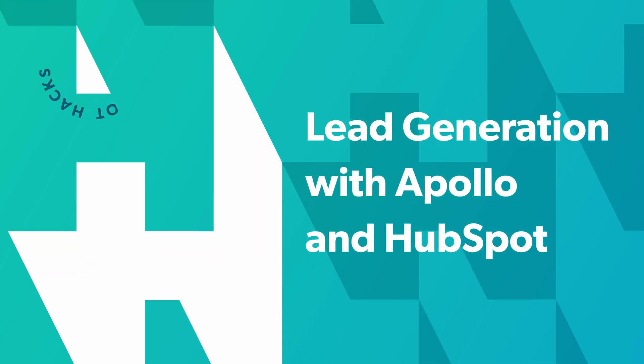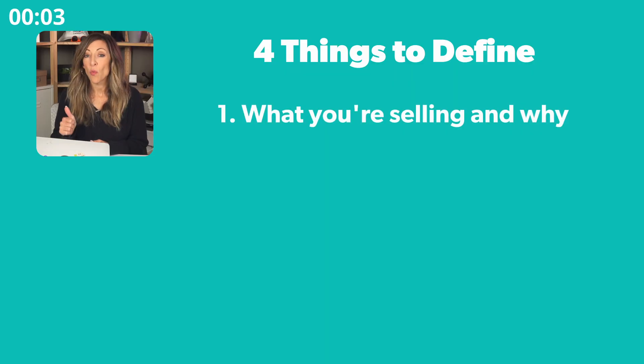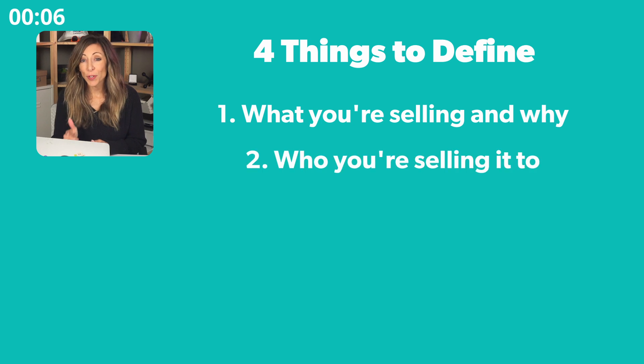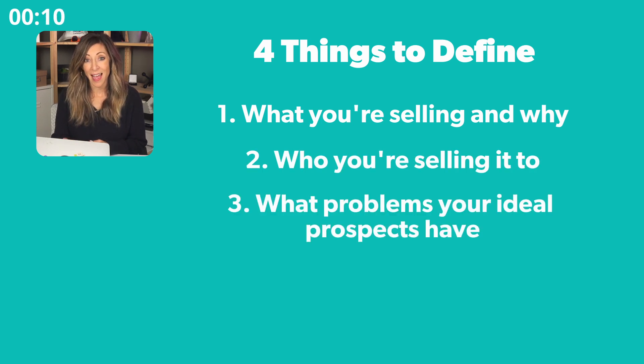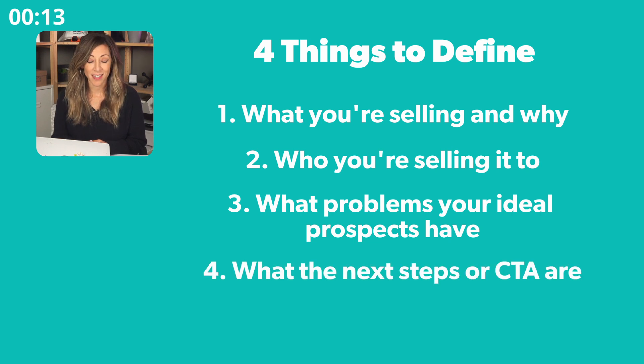Like any good sales and marketing campaign, you're going to need to have a few things defined first. Number one, what you're selling and why. Number two, who you're selling it to. Number three, what problems your ideal prospects have and how you solve them. And number four, what the next steps or call to action is. When you have your buyer personas, business goals, and that value prop nailed down, let's jump into one of our favorite tools, Apollo, and get to work.